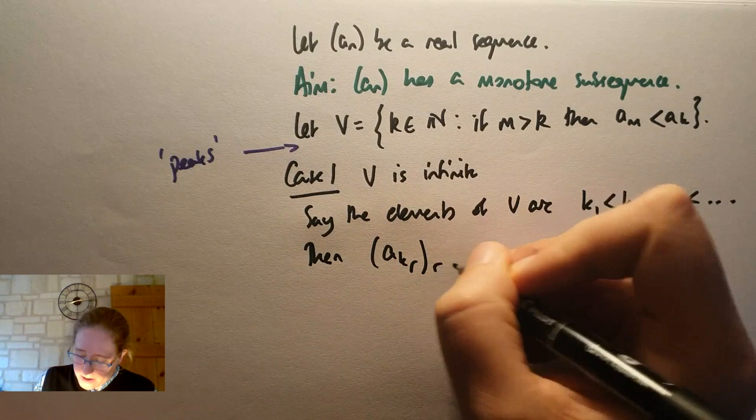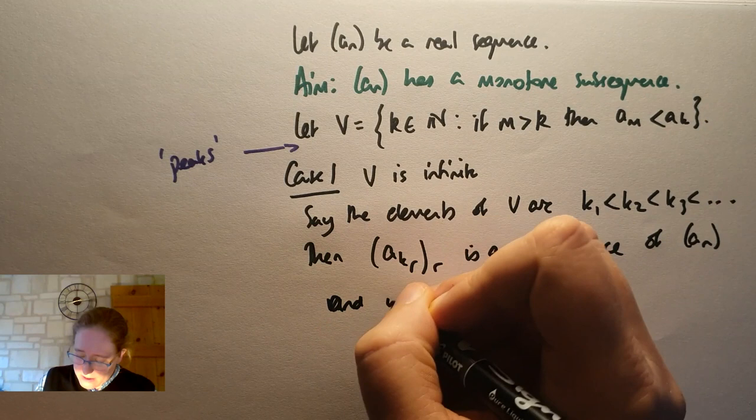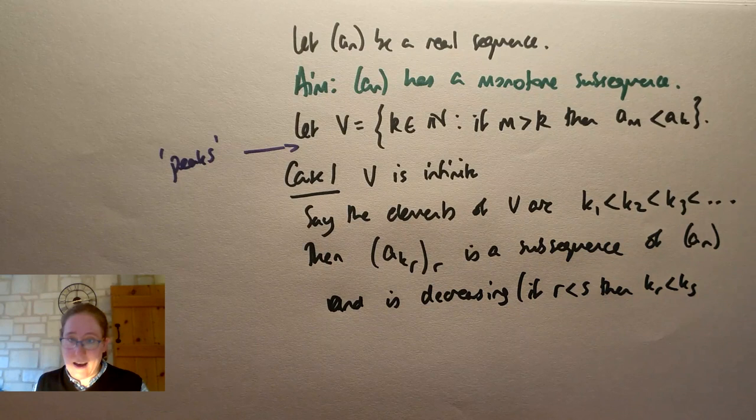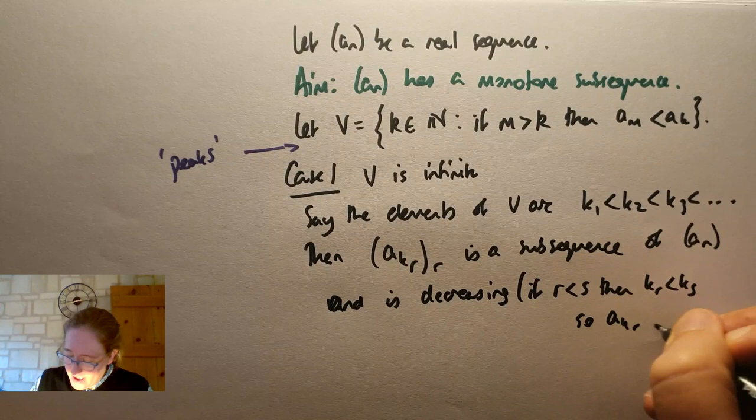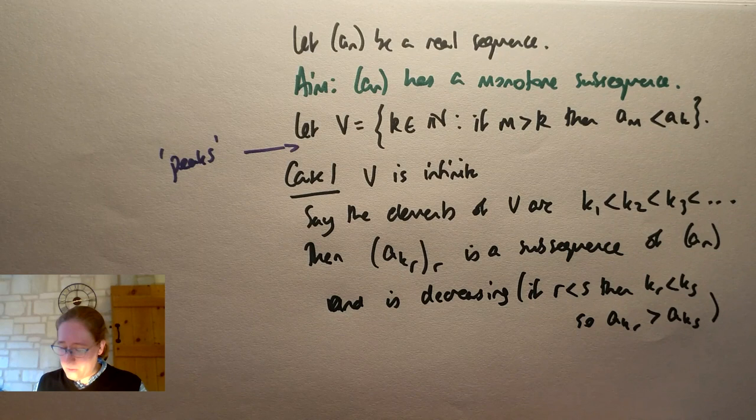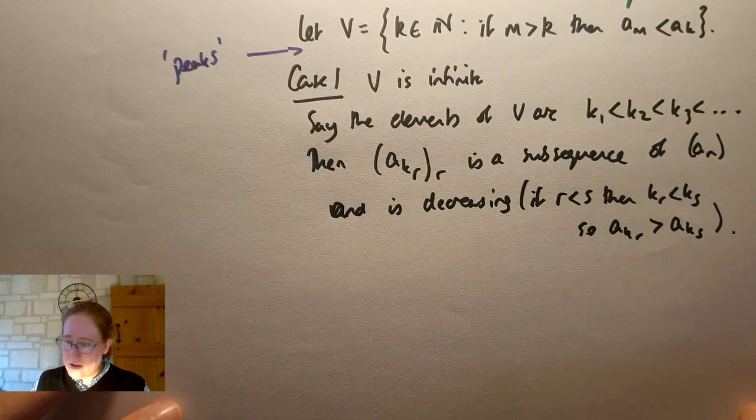So a_(k_r), as r varies, is a subsequence of a_n, and it must be decreasing and is decreasing, because if r is less than s, then k_r is less than k_s. That's how we've constructed our k's. And so a_(k_r) is greater than a_(k_s), because we know that k_r was a peak. So if a_(k_s) comes later, then it must be smaller. So in that case, we get a decreasing subsequence.